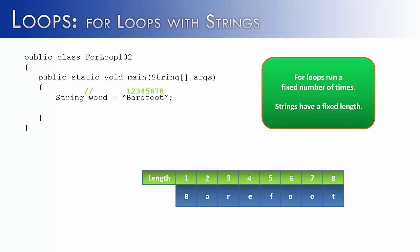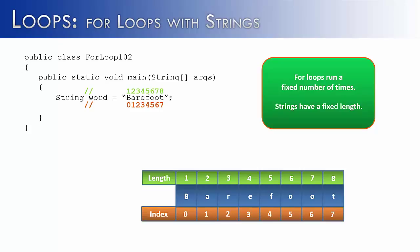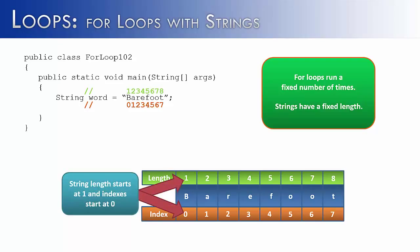Strings have a definite starting place and a definite ending place. The ending place is its length, and the beginning place is its index. It's important to remember that the index is always one less than the length, because the length starts counting at one whereas the index starts counting at zero. So if you divide a string into its individual characters, the first character is at index zero, but counted as one slot. This becomes important at the end of a string when working with a for loop.